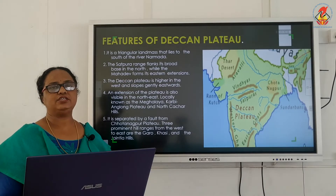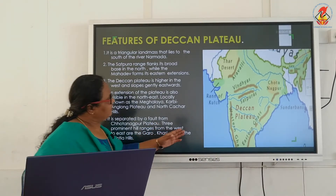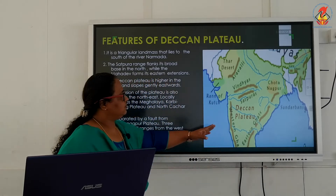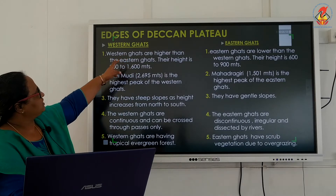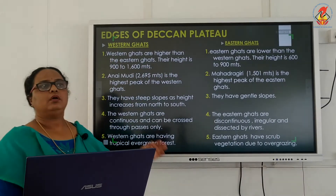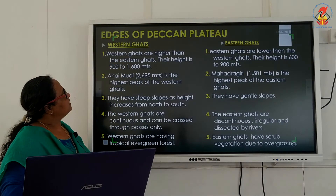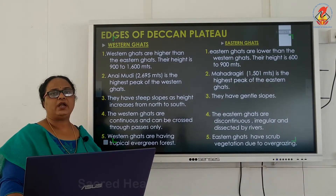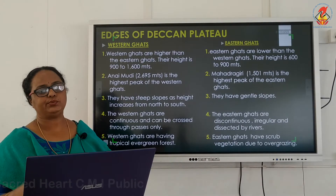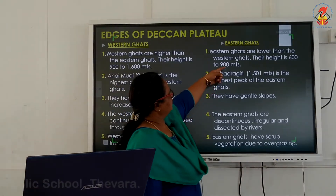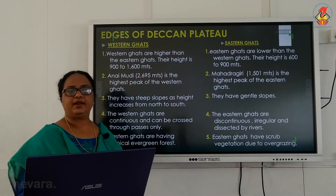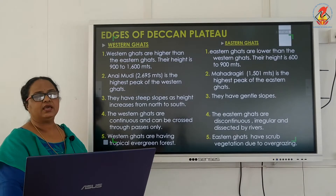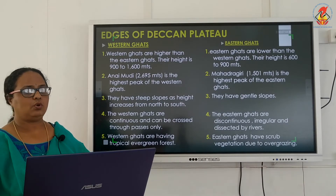The Deccan plateau has two edges: the western ghats and the eastern ghats. The western ghats are higher than the eastern ghats, with a height ranging from 900 to 1600 meters. Anamudi is the highest peak of the western ghats, while Mahendragiri is the highest peak of the eastern ghats.